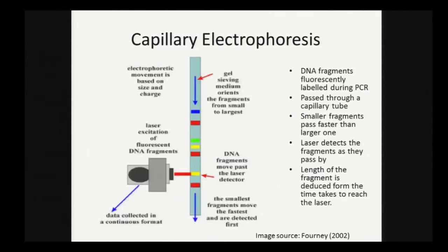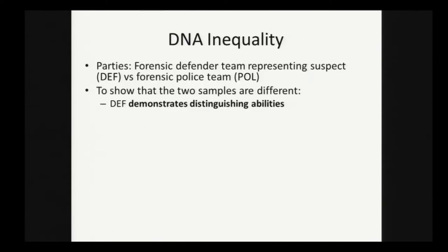How do you measure the size of the resulting fragments? One way is using a technology called capillary electrophoresis. Essentially, you pass the fragments through a capillary tube and label them fluorescently. There's a laser at the bottom that detects them as they pass by. From the time it takes to reach the laser, you can deduce the size of the fragment. Our parties in the protocol will have to have access to these technologies. We're not going to talk about the suspect as the actual prover, but rather a forensic defender team representing the suspect.